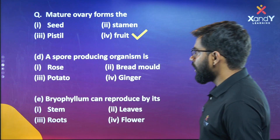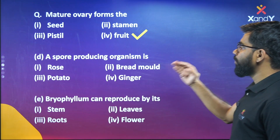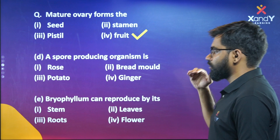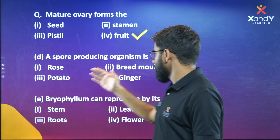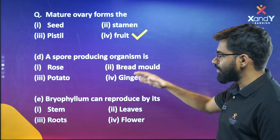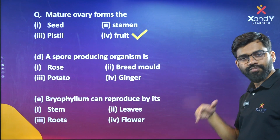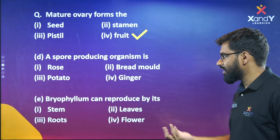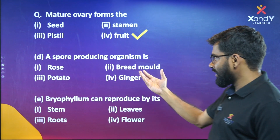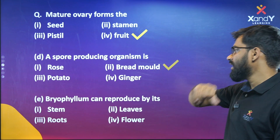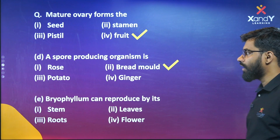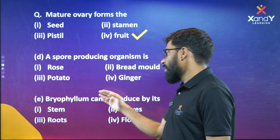This is a spore-producing organism. Options are: rose, bread mould, potatoes, and ginger. It is Bread Mold — Bread Mold is a spore-producing organism.